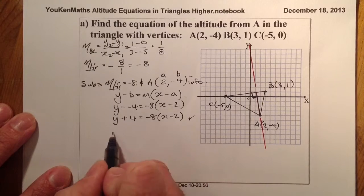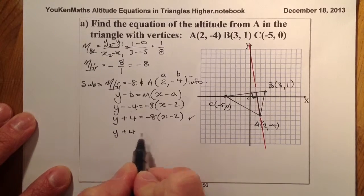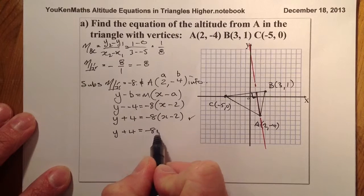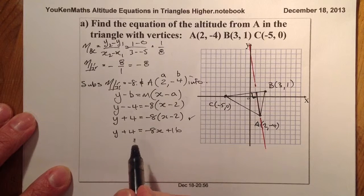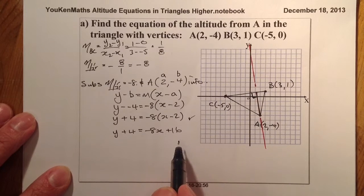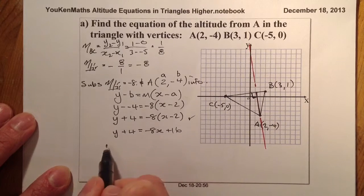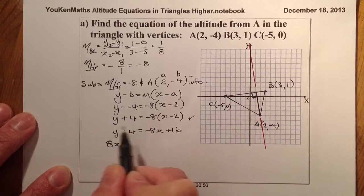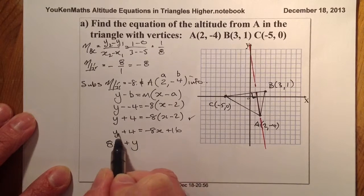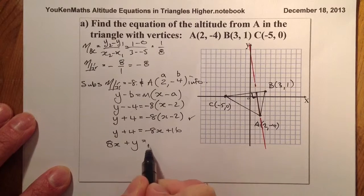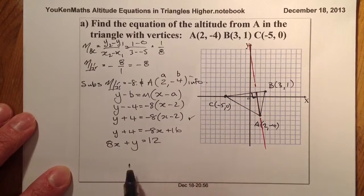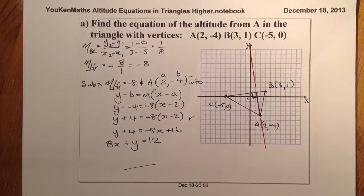Multiplying out: bring the 8x over, keep the y, and take the -4 to the other side giving 12. So 8x + y = 12. That's set up ready to do simultaneous equations. You can now freeze the video and have a go at the second question yourself.